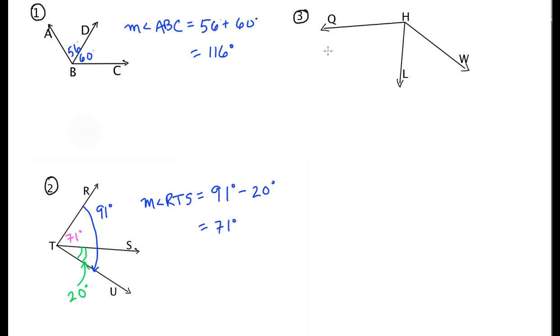Alright, moving on, example number three. So here let's use some algebra. The measure of angle QHL is 9x plus 6, the measure of angle LHW is 7x minus 2, and the whole measure, this is given, the measure of angle QHW, let's say is 148. And your job simply is to find the value of x.